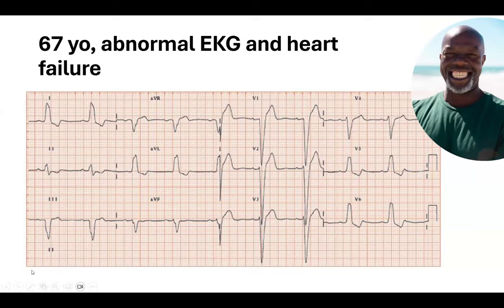Where do you position the CRT lead? Studies have shown it's best to place the LV lead in the posterior lateral or basal part of the heart — lateral or posterior lateral is preferred. If anterior lateral is the only branch available, that's acceptable. What does not help is placing it in the anterior interventricular vein or anywhere close to the RV lead. You want to be as lateral and as basal as possible, because that is the most delayed part of the heart — the area you're trying to bring in to synchronize.